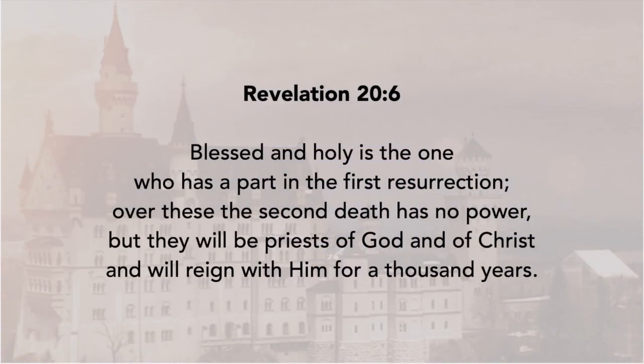In Revelation, we find the kingdom is a thousand years long — six times in seven verses. 'Blessed and holy is the one who has a part in the first resurrection; over these the second death has no power, but they will be priests of God and of Christ and will reign with him for a thousand years.' Then verse 2: a thousand years; verse 3: a thousand years; verse 4: a thousand years; verse 5: a thousand years; verse 6: a thousand years; verse 7: 'when the thousand years are completed.' We didn't know this until Revelation was written, probably around 95 AD.